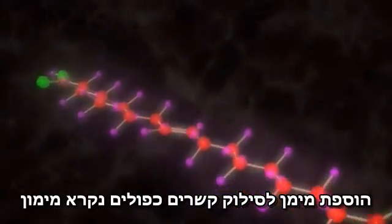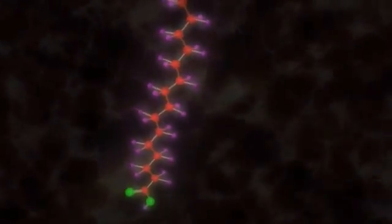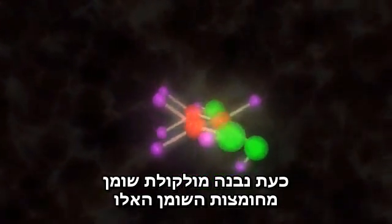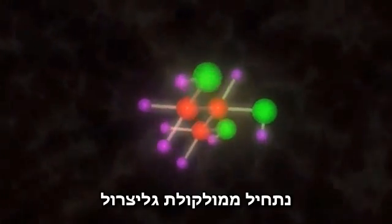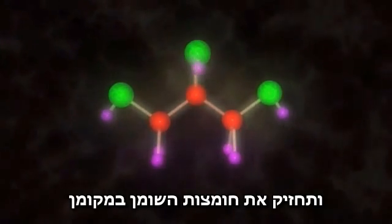Adding hydrogen to replace carbon double bonds is called hydrogenation. Now let's build a fat molecule from these fatty acid building blocks. We begin with a molecule of glycerol, which will form the backbone of the molecule and hold the fatty acids in place.